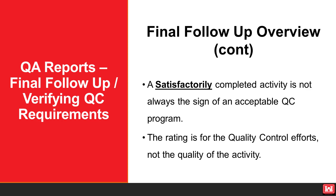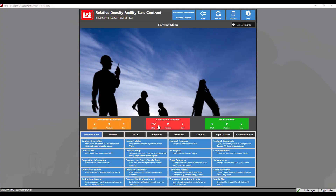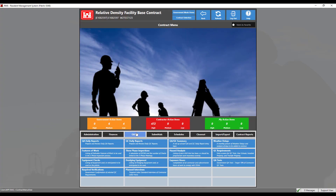Setting the QA rating for the final follow-up for an activity takes place in the QA Daily Reports module. In RMS, navigate to the QA QC tab, then select the QA Daily Reports module.